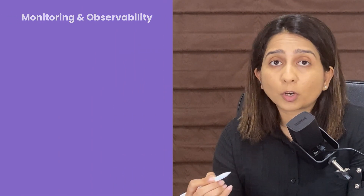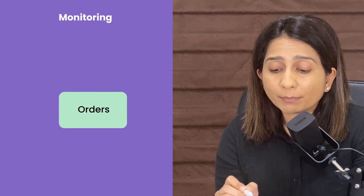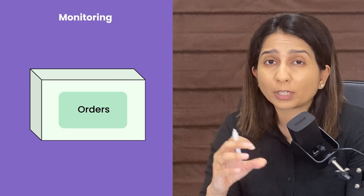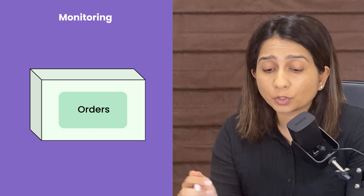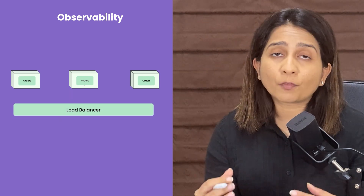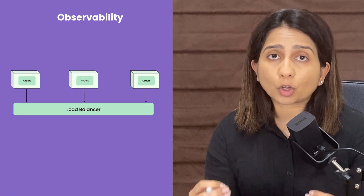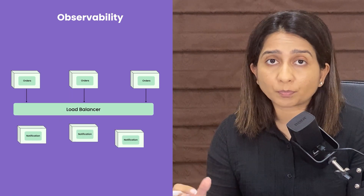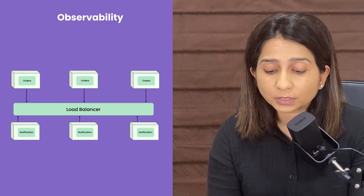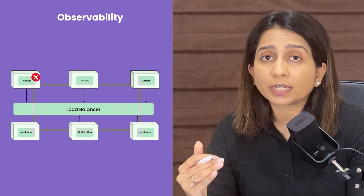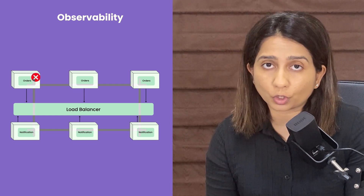That is where the concept of monitoring and observability comes into the picture. When we talk about monitoring, it is easy to implement when you have one deployment or a few services — you know what to monitor. Observability itself is a different concept altogether: you have to implement a system so that you can observe the system as a whole to see if it is working as expected or not.